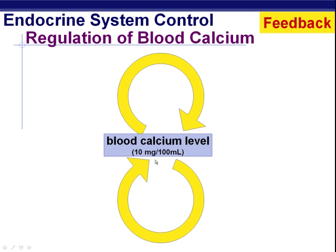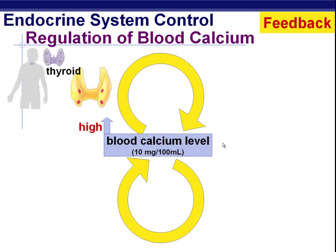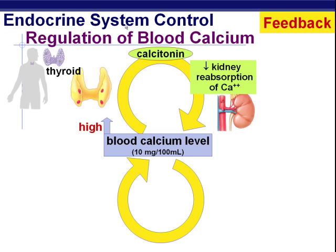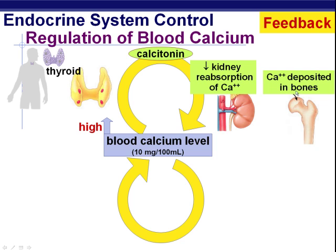Blood calcium levels — this is another really easy hormonal control system. If your calcium level in your blood is too high, the thyroid gland will be stimulated to produce a hormone called calcitonin. Calcitonin will cause the kidney to reabsorb calcium to get it out of the blood, and will also cause us to deposit more calcium in our bones, which are a storehouse for calcium — so we get it out of the blood, into the bone and kidney, where it can be used sufficiently.